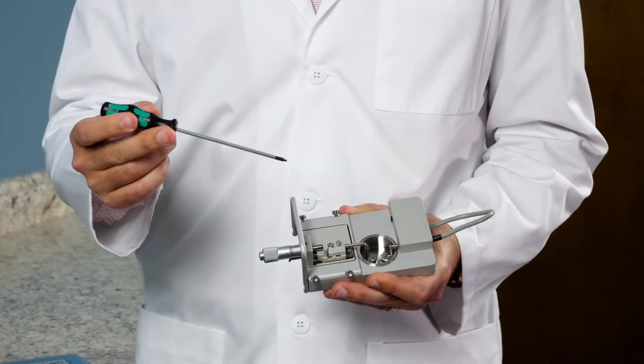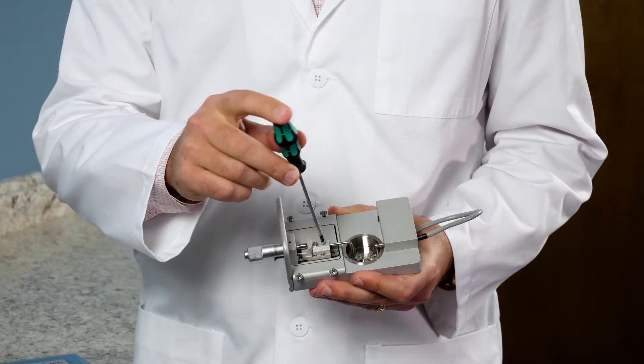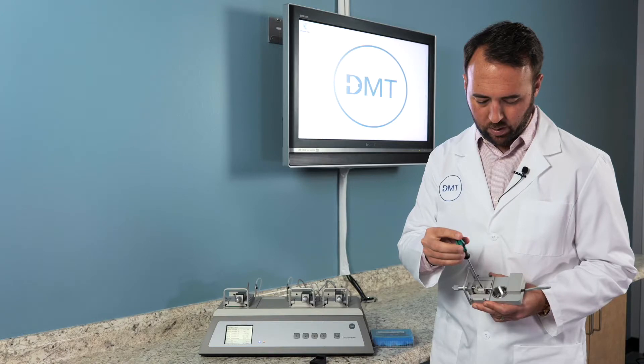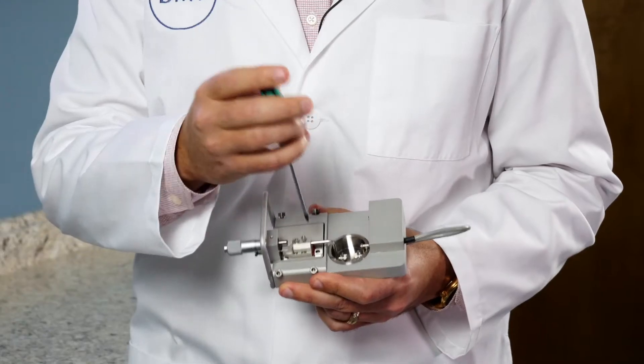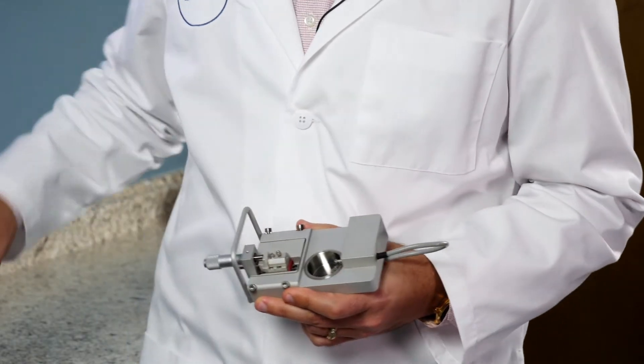use your ball end screwdriver to loosen the first screw closest to the chamber. Loosen that and then you can remove the jaw mount.